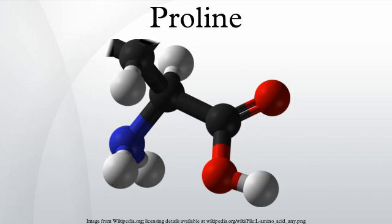Proline is an amino acid, one of the 20 DNA-encoded amino acids. Its codons are CCU, CCC, CCA, and CCG. It is not an essential amino acid, which means that the human body can synthesize it. It is unique among the 20 protein-forming amino acids in that the amide nitrogen is bound to not one but two carbon groups, thus making it a secondary amine. The more common L-form is S-stereochemistry.